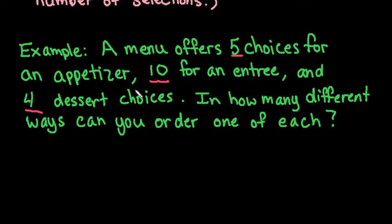So with this, a menu offers 5 choices for an appetizer, so we would just take 5, multiply it by the number of entrees. So you have 10 for an entree and 4 choices for dessert. So we would just have to multiply this out.